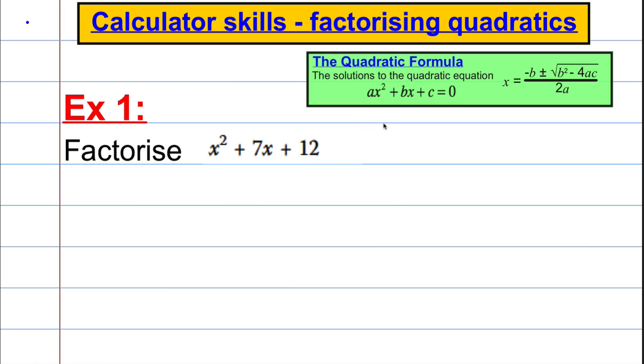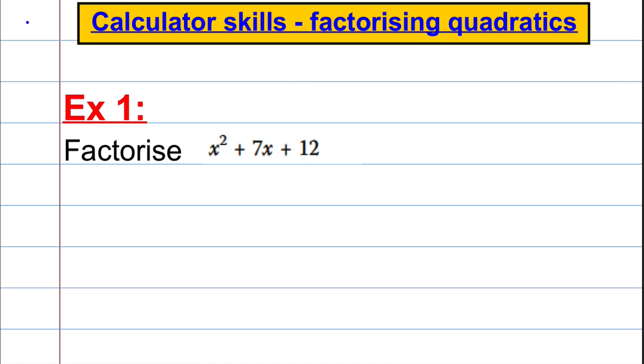Imagine you were asked to factorise this expression here. You should know how to do this. It's two numbers that multiply to 12 and add up to positive 7. And the numbers are positive 3 and positive 4. So, we would factorise that as x plus 3, x plus 4.